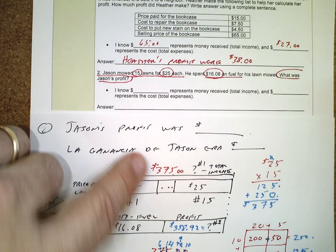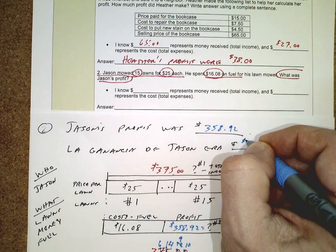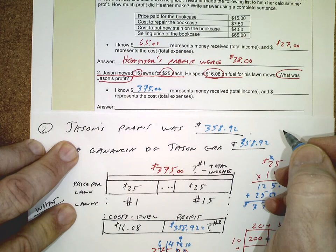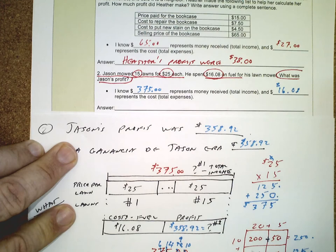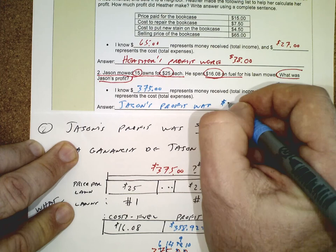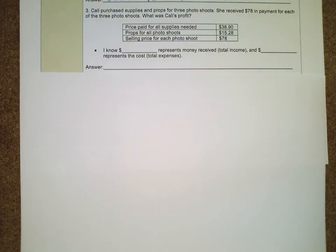We put $358.92 here and fill in our answer statement. We now have an answer next to each question mark in our diagram. The amount received is $375, and $16.08 represents the total expenses. The answer is: Jason's profit was $358.92. That takes care of problem number two.